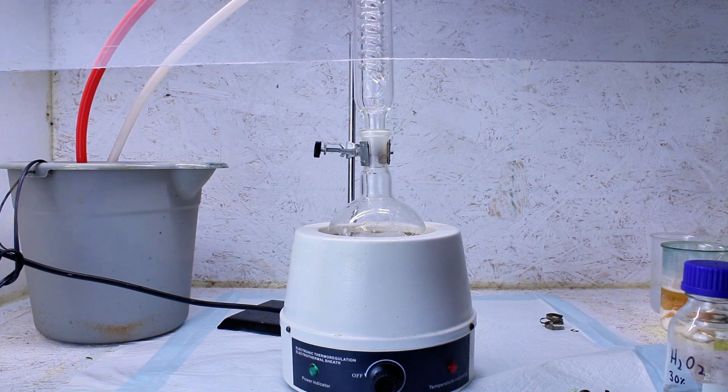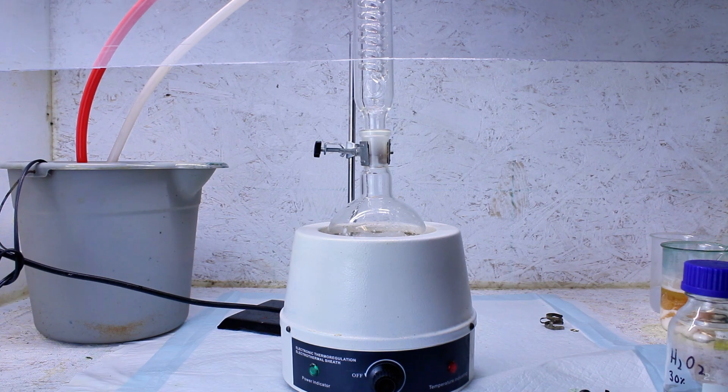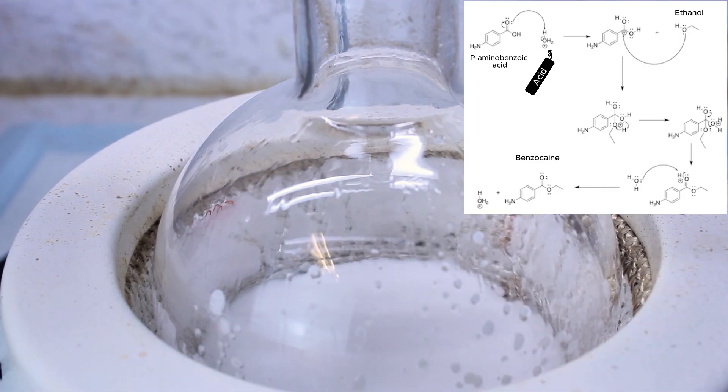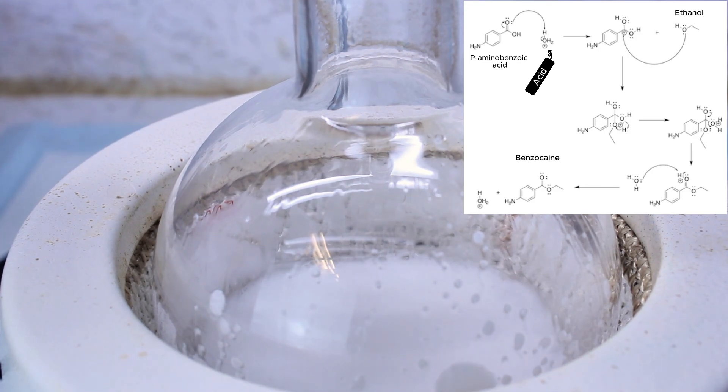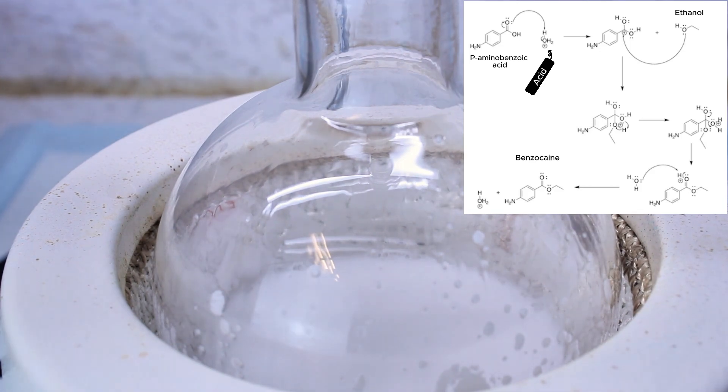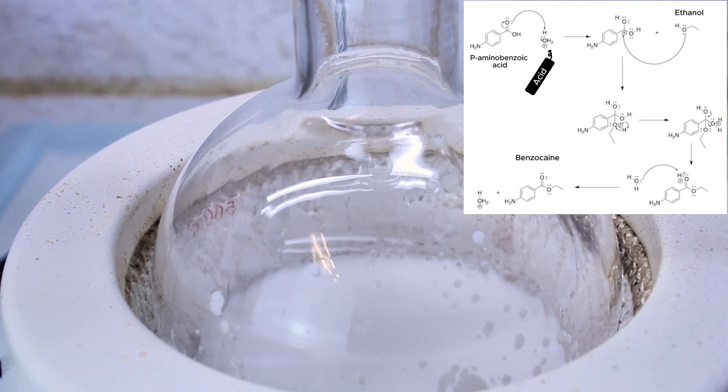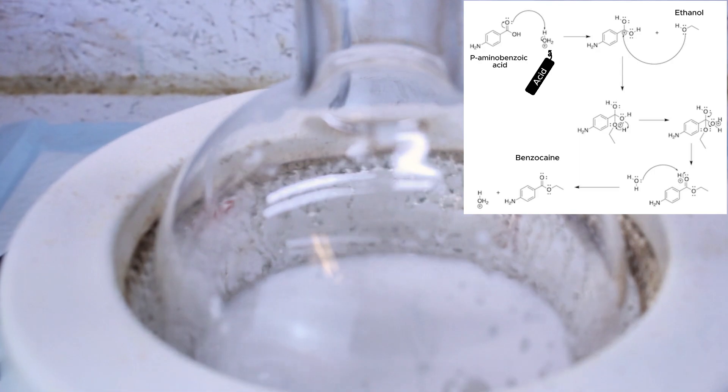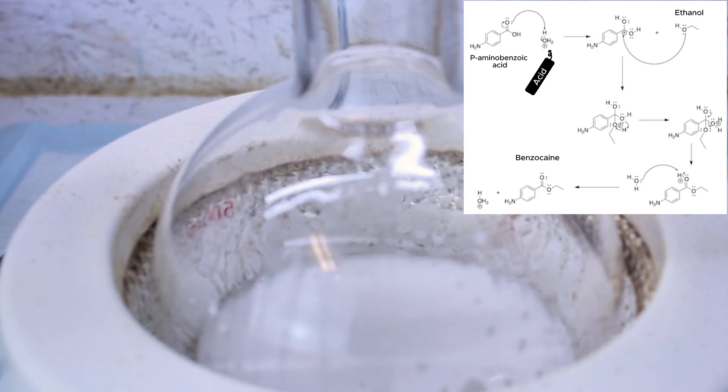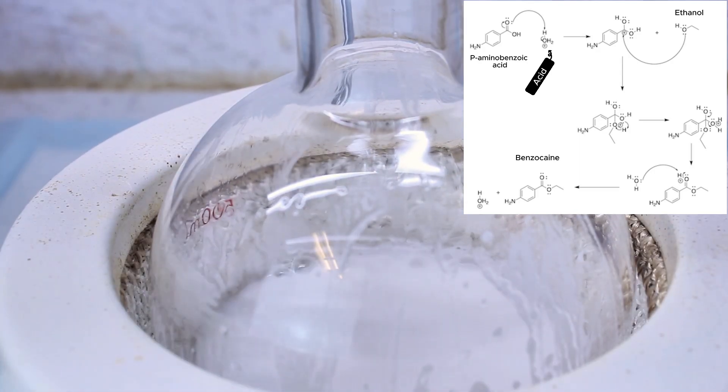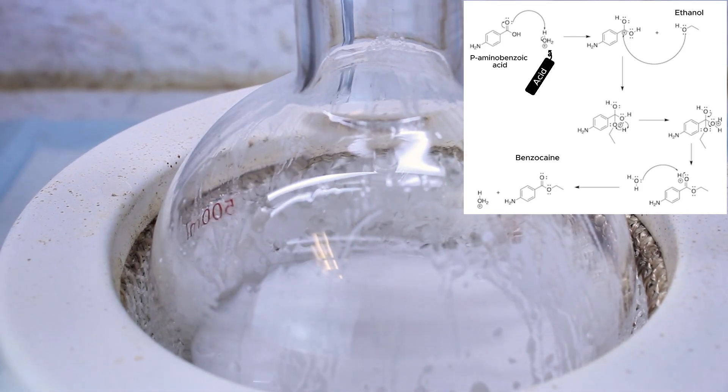What's happening now is the acid-catalyzed Fischer esterification between the ethanol and the para-aminobenzoic acid. In the first step of this reaction, the carbonyl oxygen is protonated by the sulfuric acid catalyst, activating it toward a nucleophilic attack from the ethanol. When this happens, a lone pair of electrons from the oxygen atom of the alcohol form a bond with the carbonyl carbon, breaking its pi bond to the other oxygen.